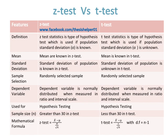Sample size n is greater than 30 in Z-test, while sample size n is less than 30 in T-test.